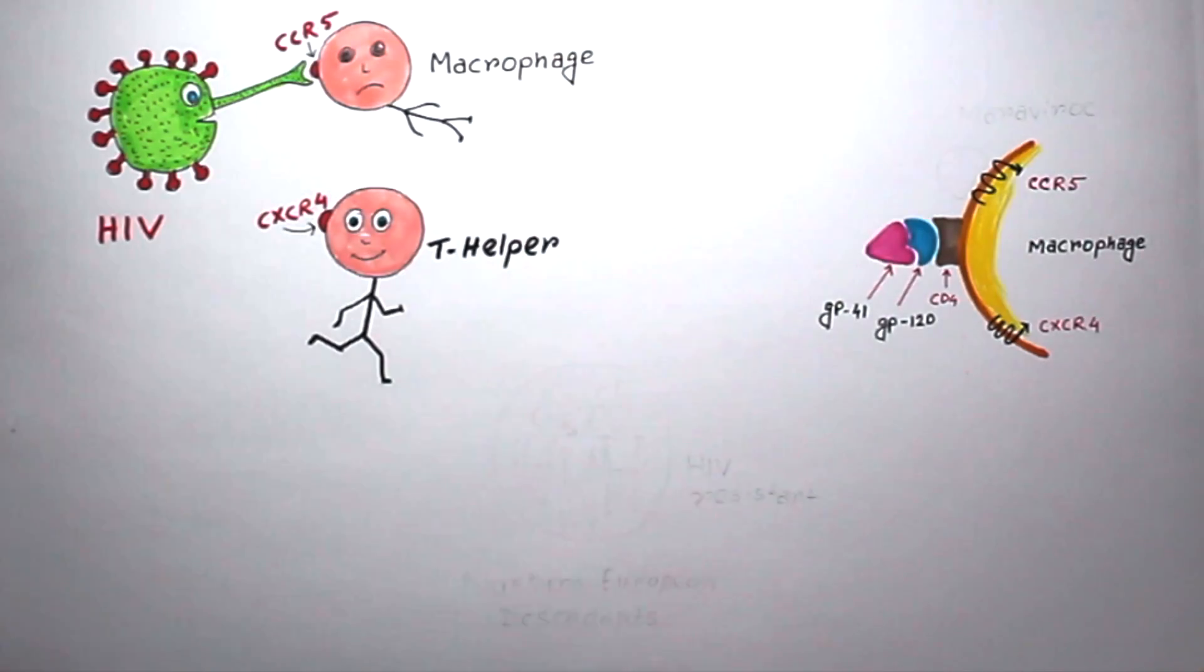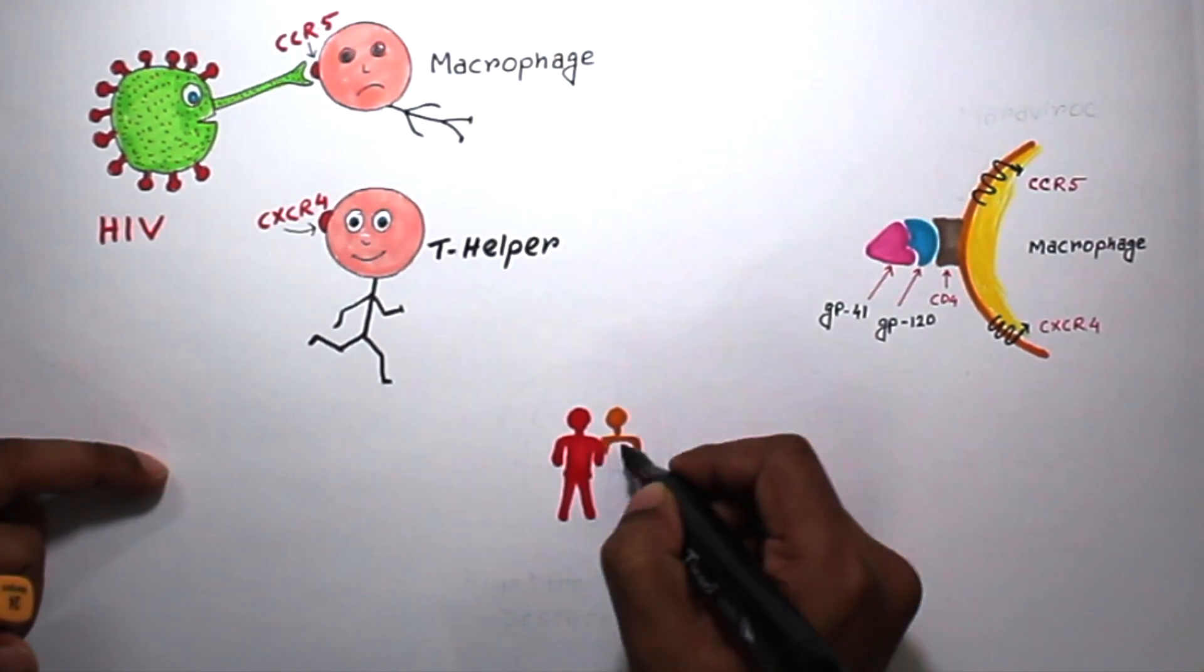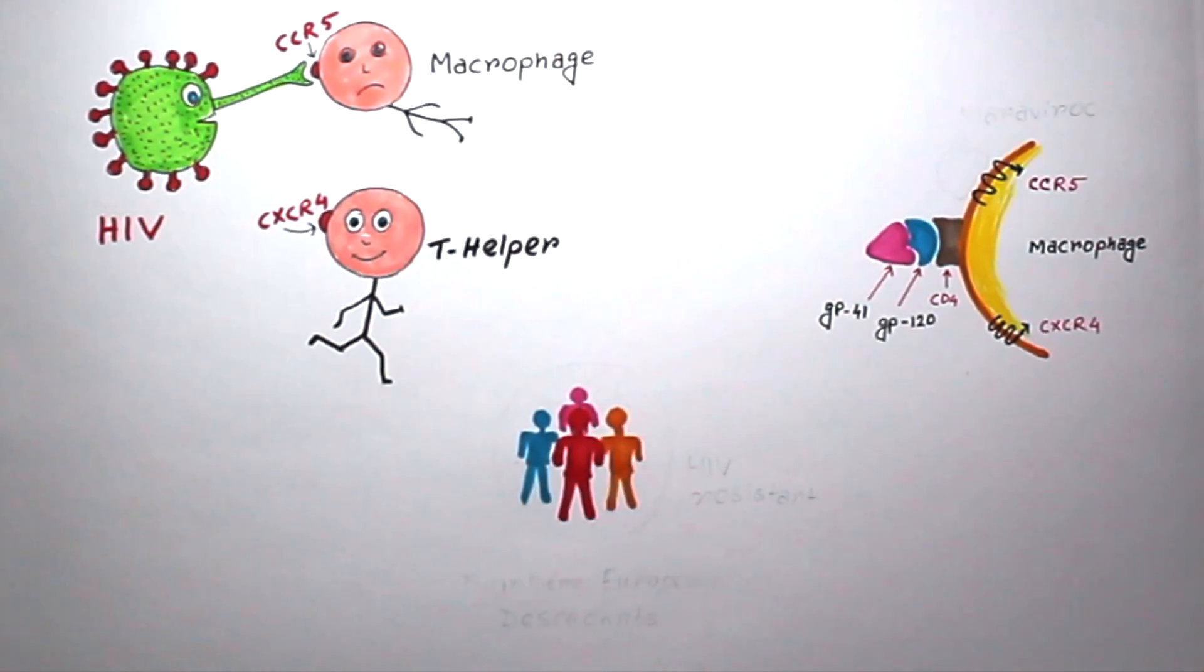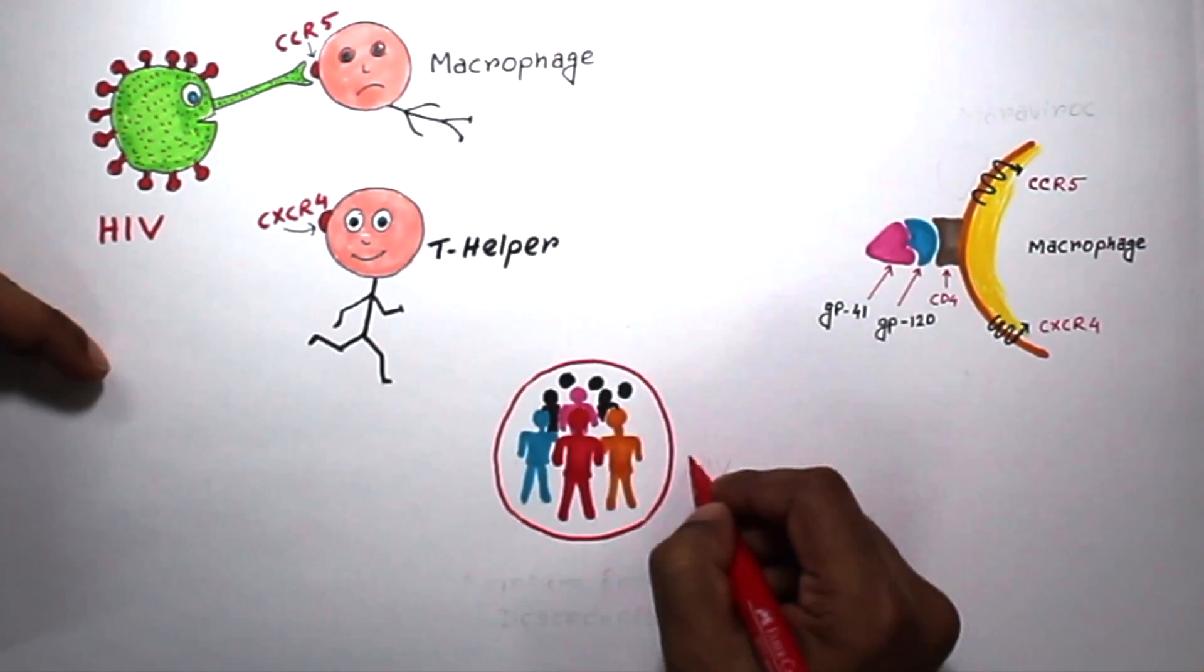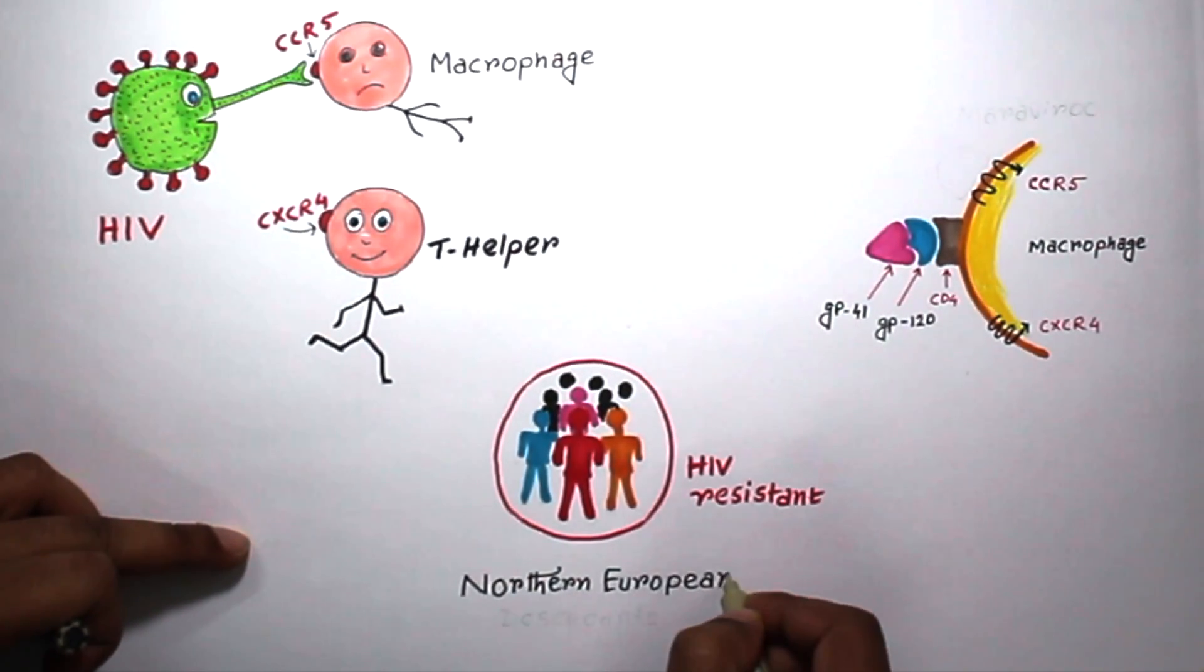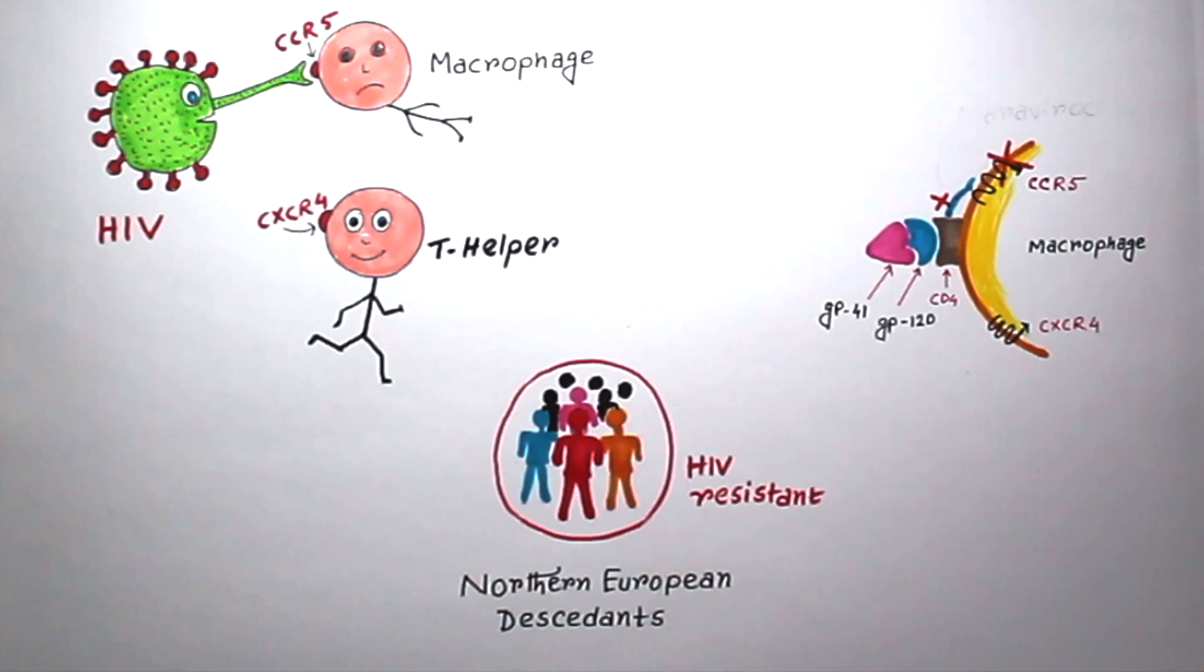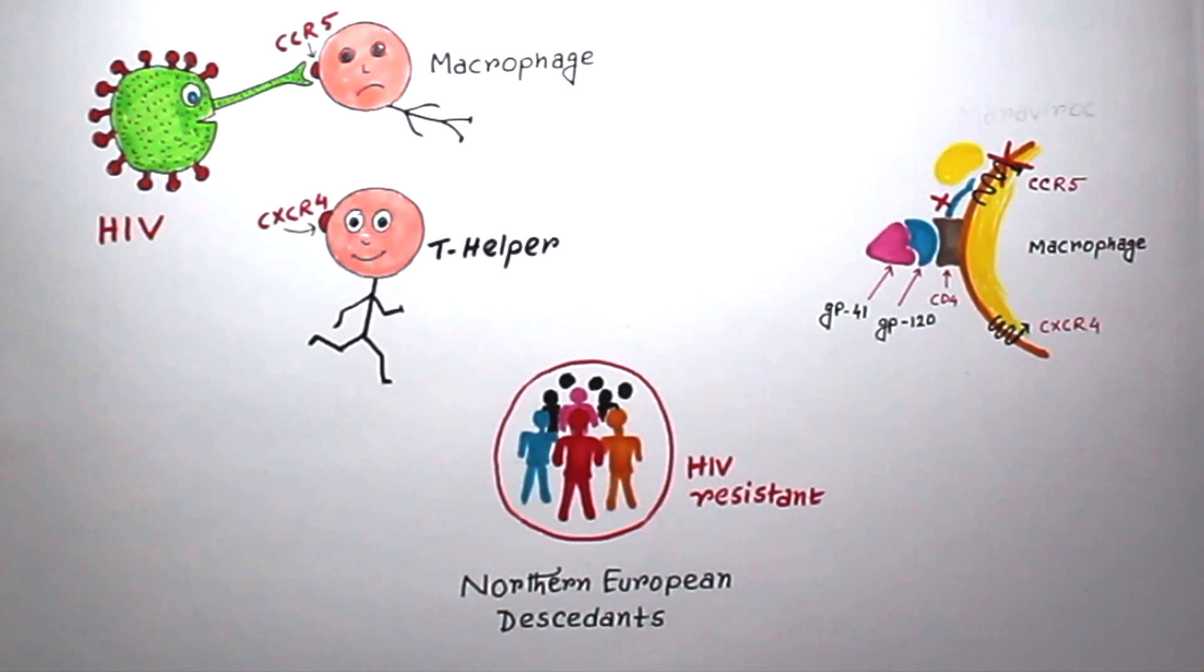Another important point is previously it was believed that once a person is infected with HIV, it will definitely develop AIDS. But surprisingly, there are 10% lucky people who can survive without any treatment. They are Northern European descendant people. Scientists found that these people have a mutation in the CCR5 receptor area, so HIV cannot bind with their cells. They have natural immunity against HIV, and scientists already made a drug against this CCR5 receptor.